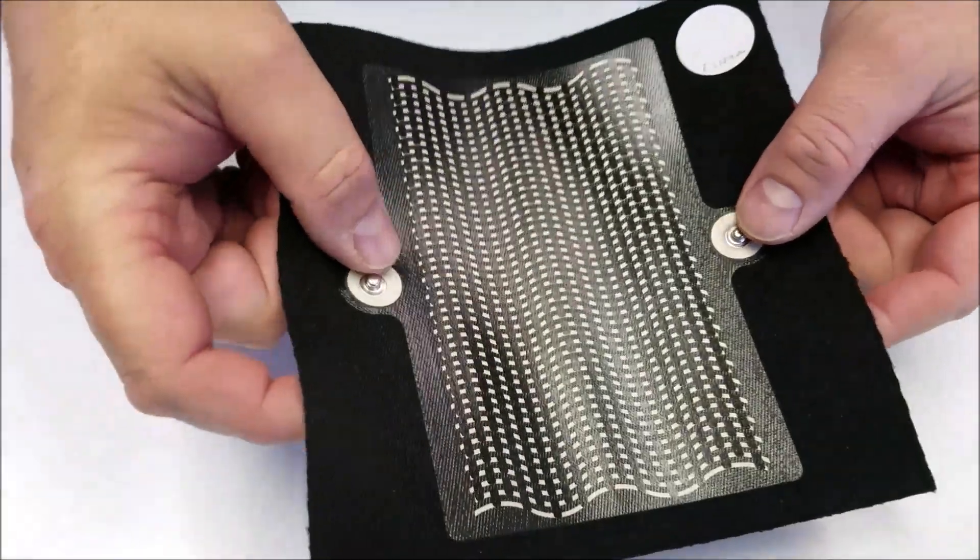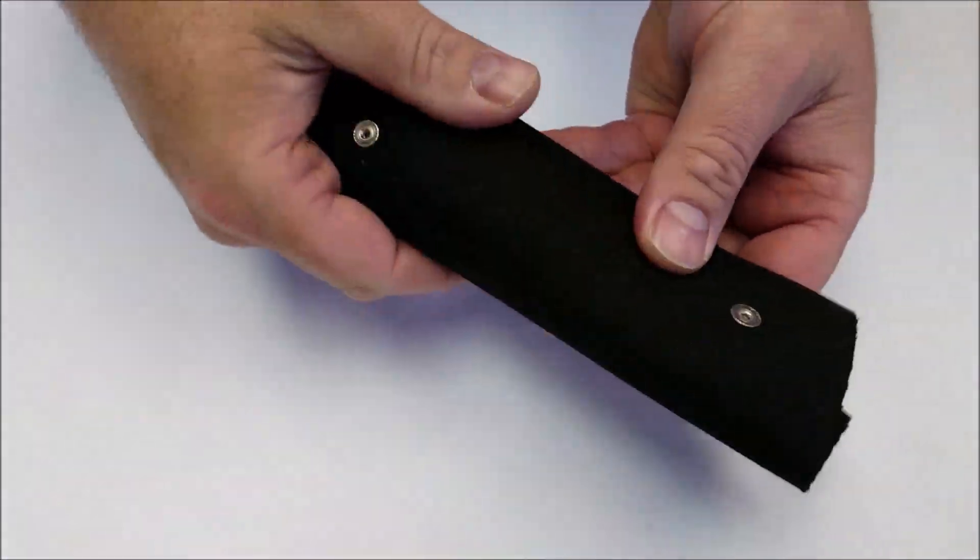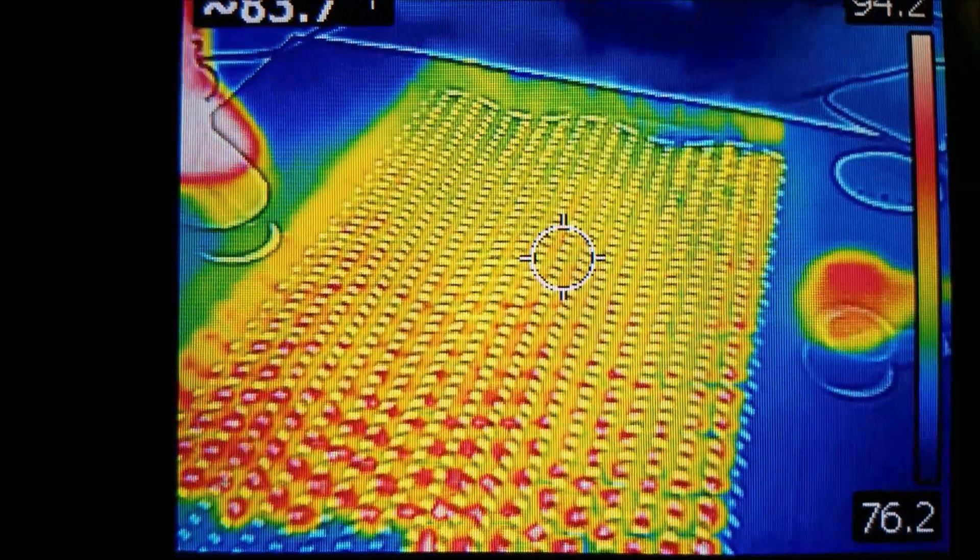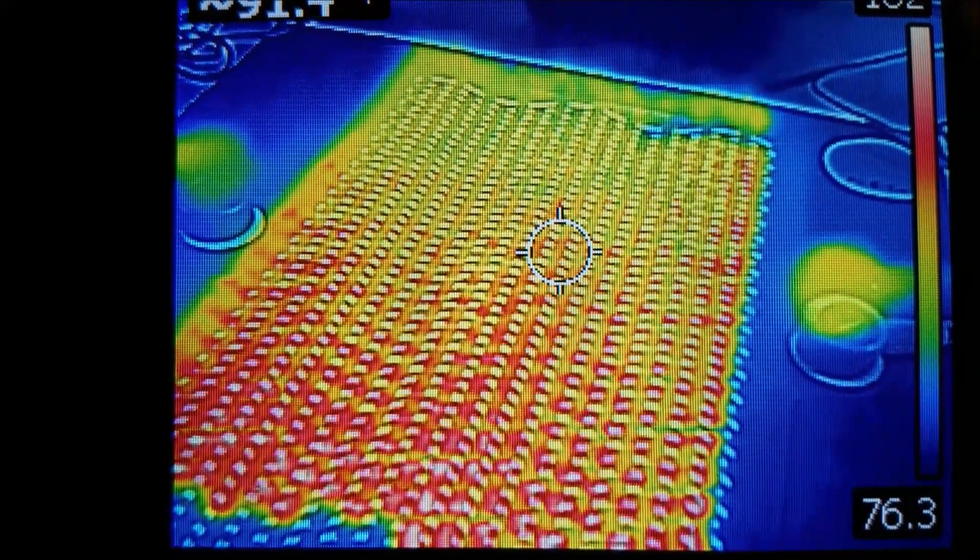Here's an example of a heater that had been applied to a denim type material. This next clip is a thermal image of a heater heating up when electricity is applied. You can see that the circuit heats up immediately.